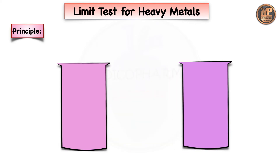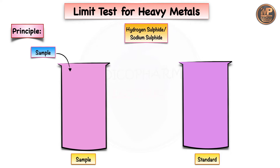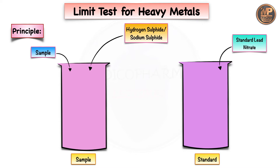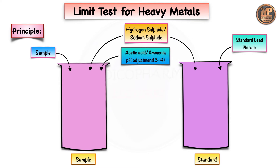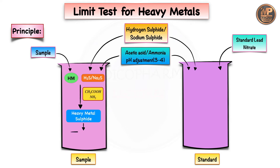Now we'll understand the principle. We take two Nessler cylinders — one marked as the sample cylinder and one as the standard cylinder. To the sample cylinder we add sample solution and hydrogen sulfide or sodium sulfide. To the standard cylinder we add standard lead nitrate solution, then also add hydrogen sulfide or sodium sulfide. We then adjust pH between 3 to 4 with acetic acid and ammonia for both.